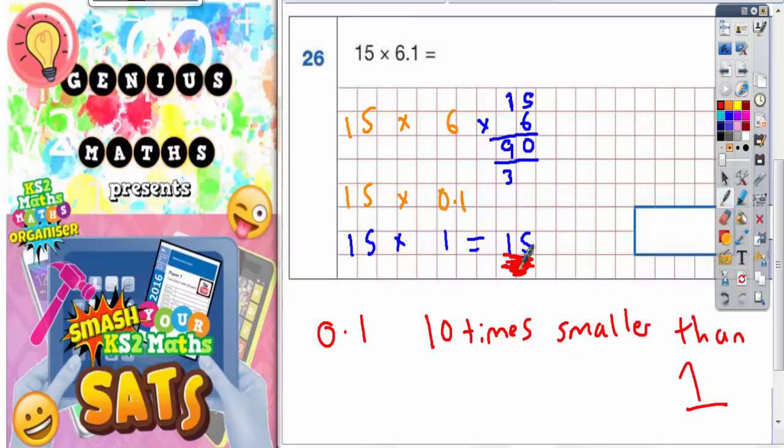So 10 times smaller than 15, if you just divide that by 10, you're going to get the answer 10 times smaller. So that's going to be 1.5. So 15 lots of 0.1 will be 1.5.